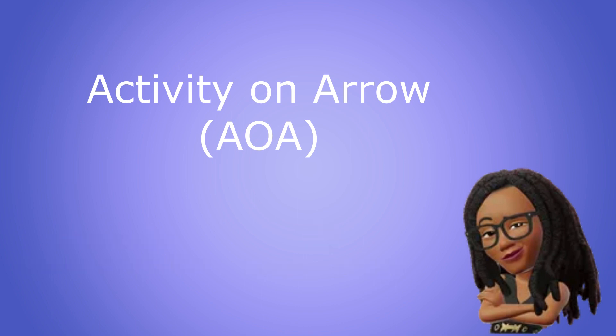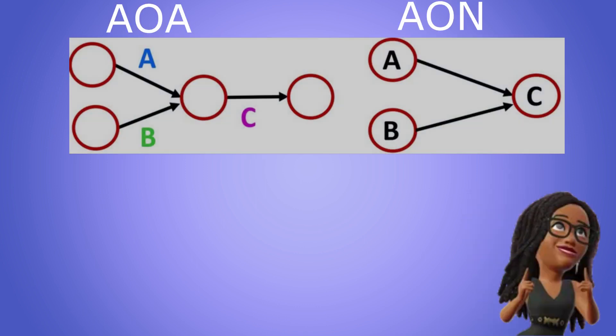Let's see what that looks like when we compare an activity on arrow network to an activity on node network. As you can see this particular project network has three activities A, B and C. In the first diagram the activities are represented by the arrows while the nodes show where each activity starts and stops. In the second diagram the activities are represented by the nodes while the arrows show what activities come next.